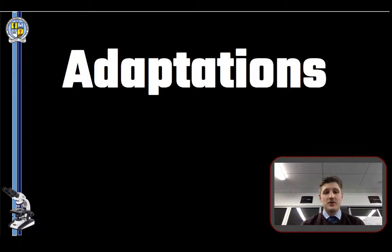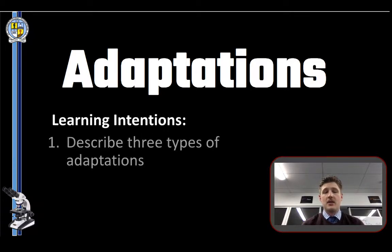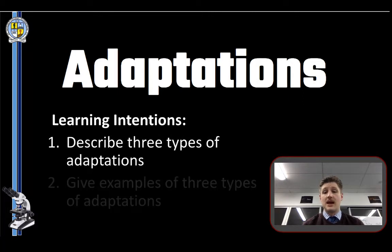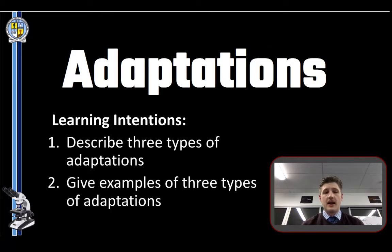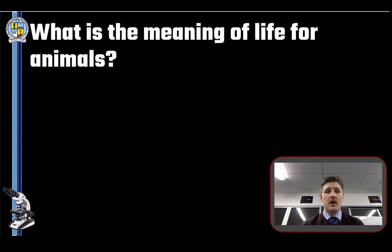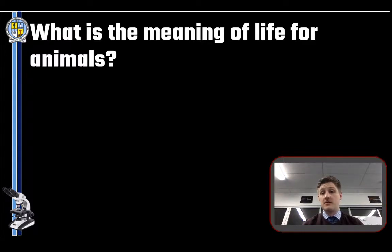Welcome to this short video on adaptations. Today we're going to cover the three main types of adaptations and plenty of examples from nature. But first, what is the meaning of life for an animal? Every single living thing wants to do two things: they want to survive and they want to reproduce. All of an animal's adaptations will be geared towards one of these two things.